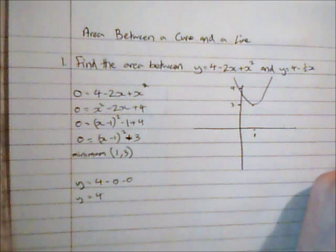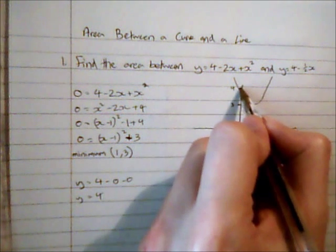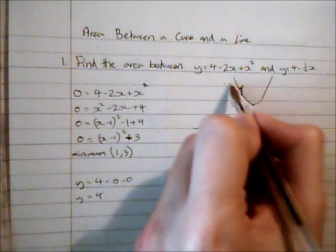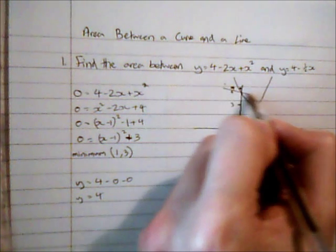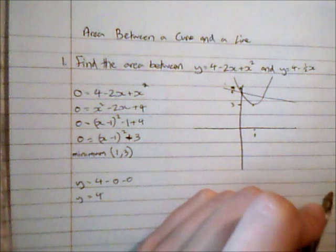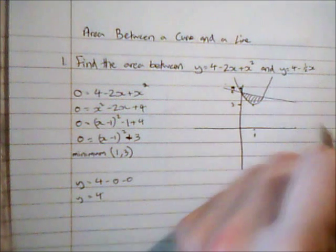And then I'm going to also consider the line. So the line is y equals 4 minus a half x so that's going to intersect at 4 as well. And it has a negative gradient so it's something along those lines. And it's this area here I'm asked to find, the area between the curve and the line.